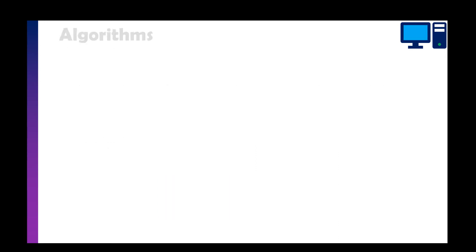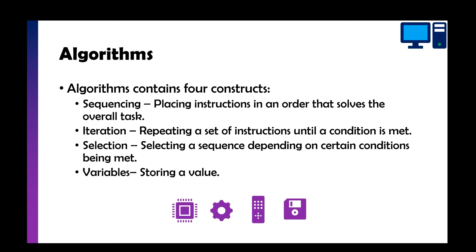Now algorithms themselves contain four constructs. You've got sequencing, iteration, selection, and variables. So sequencing is making sure your instructions are in an order that solves the task, so making sure it's in the correct order or in some order that makes sense. Iteration is where you repeat a set of instructions until a condition is met. Selection is selecting a piece of code or something to do based on certain conditions. So for example, it might be asking questions that can be quite different if you're a man or a woman. So if gender equals M for male then ask this set of questions, if gender equals F female then ask this set of questions. And the variable is where we just store a value.